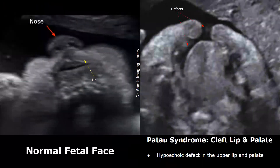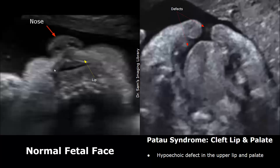Another common facial abnormality includes cleft lip and palate. These images show transverse oblique views at the fetal mouth. This is the normal image showing the fetal nose, upper lip and mouth. No hypoechoic defect is present in the normal image. But if there is a cleft lip and palate, you will find a hypoechoic defect in the upper lip and a hypoechoic defect in the palate. This type of appearance indicates a cleft lip and palate.